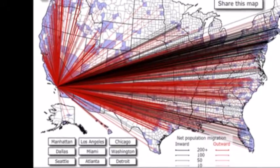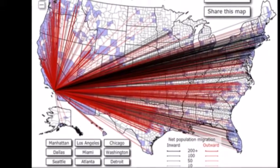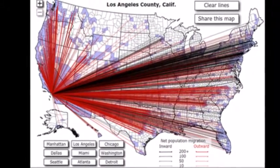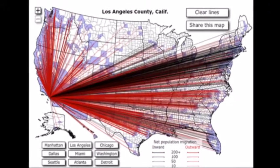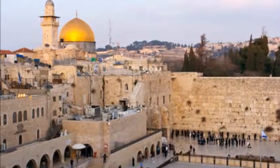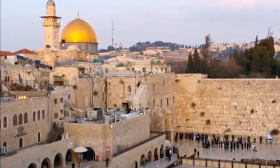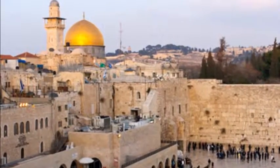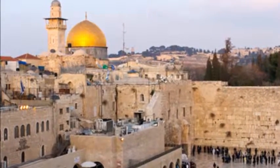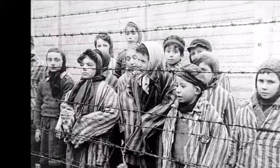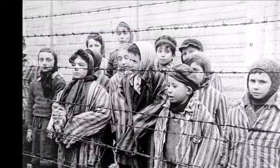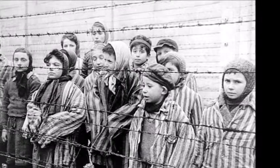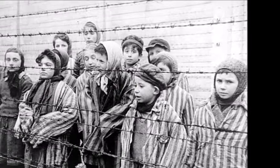Finally, migration selectivity is when only people exhibiting certain characteristics in a population are choosing to migrate. An example of migration selectivity could be the migration of people during the Holocaust. Many Jewish people were forced to migrate to Israel or into concentration camps. Migration selectivity is more often the result of a certain push factor than of a pull factor.